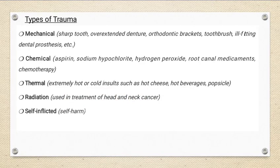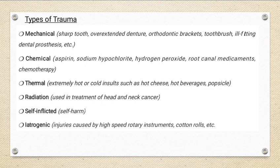Radiation and self-inflicted trauma can also cause traumatic ulcers. Radiation, especially in treatment of the head and neck, and self-inflicted causes such as bulimia — where induced vomiting can cause ulceration in the oral cavity either from vomit material or from fingernails — are also etiologies. Iatrogenic causes include the very common dental cause of high-speed rotary instruments.